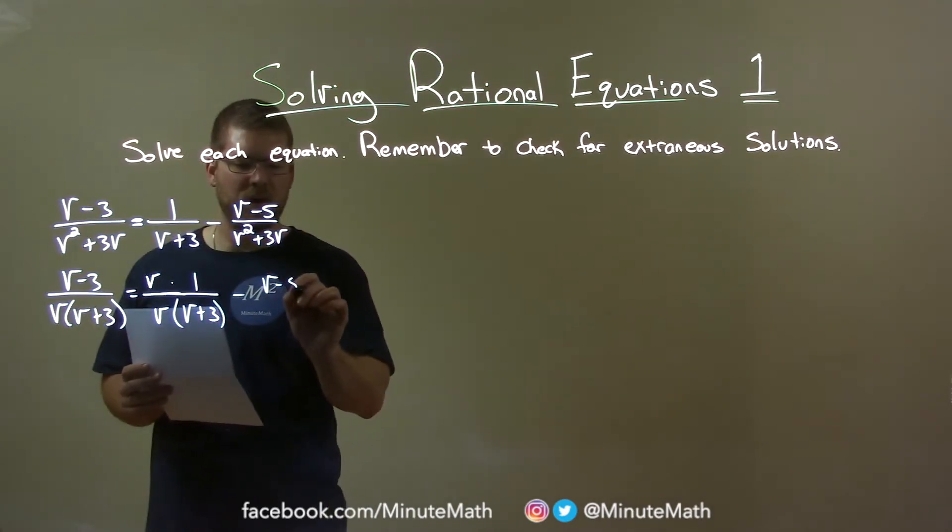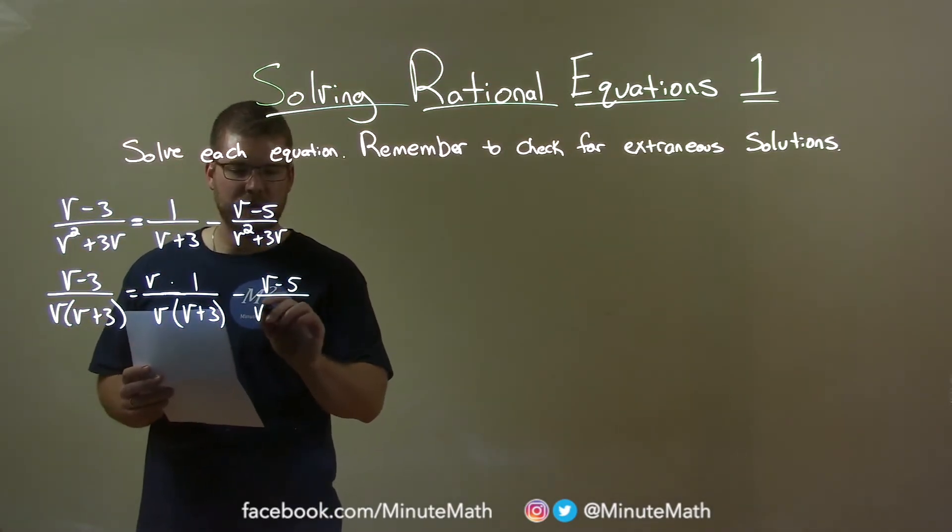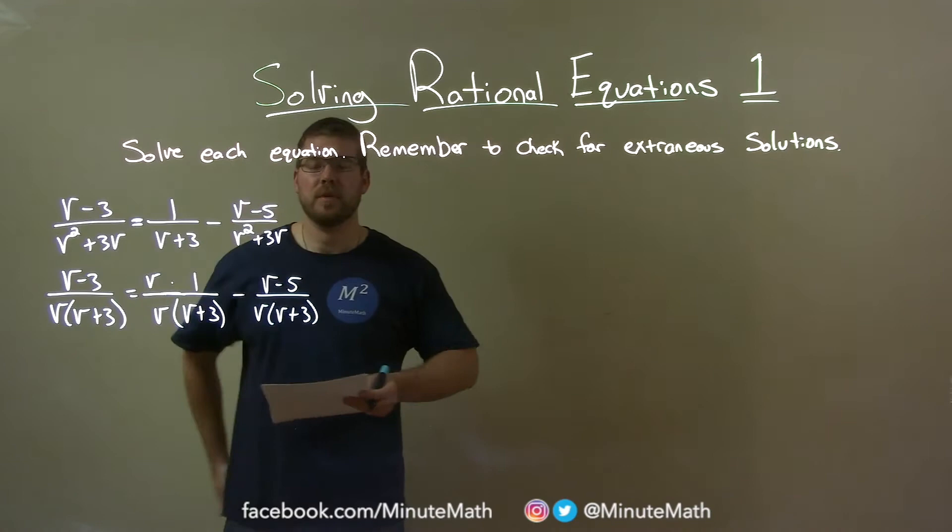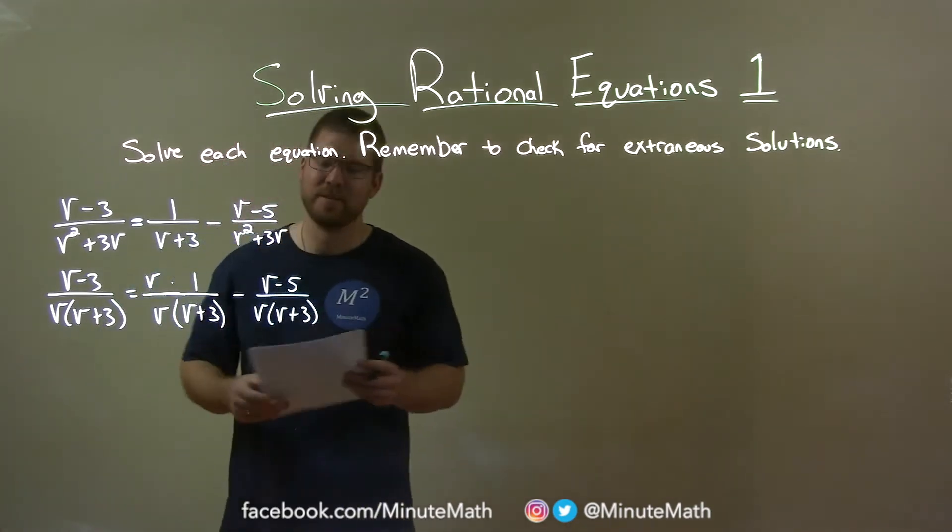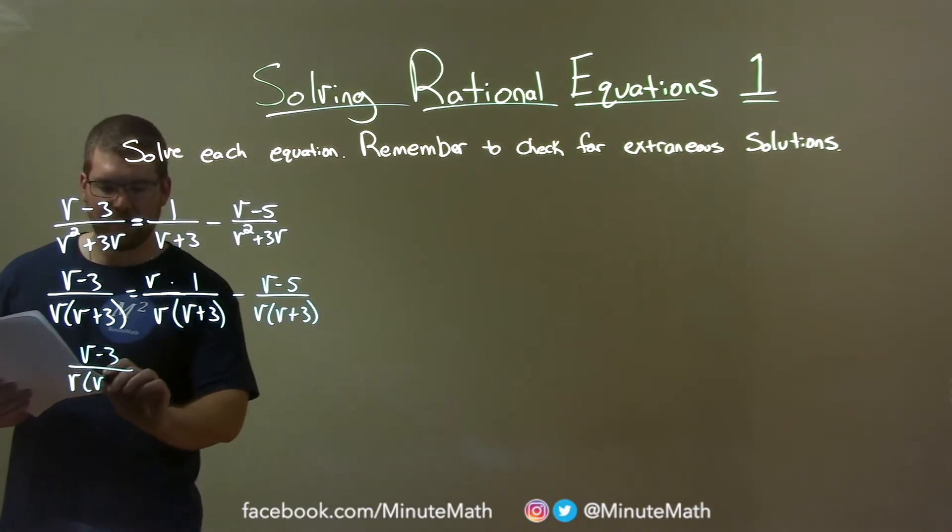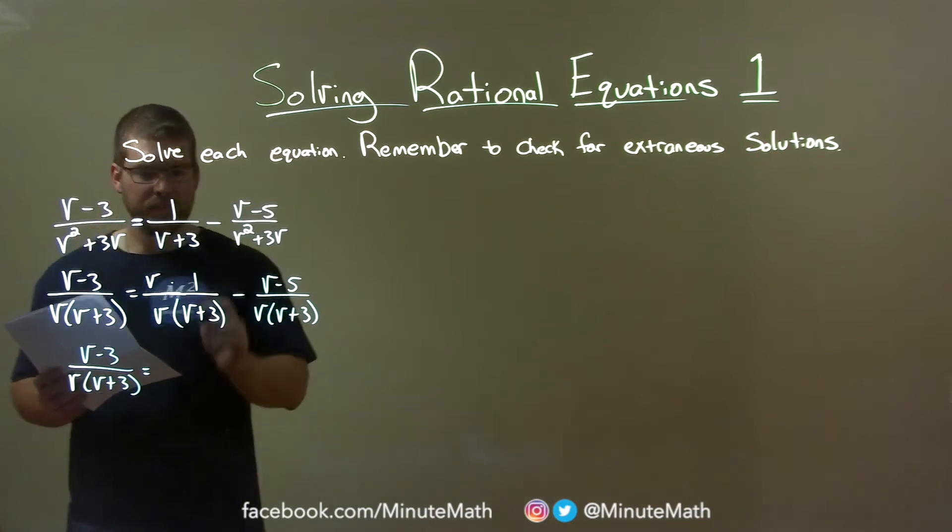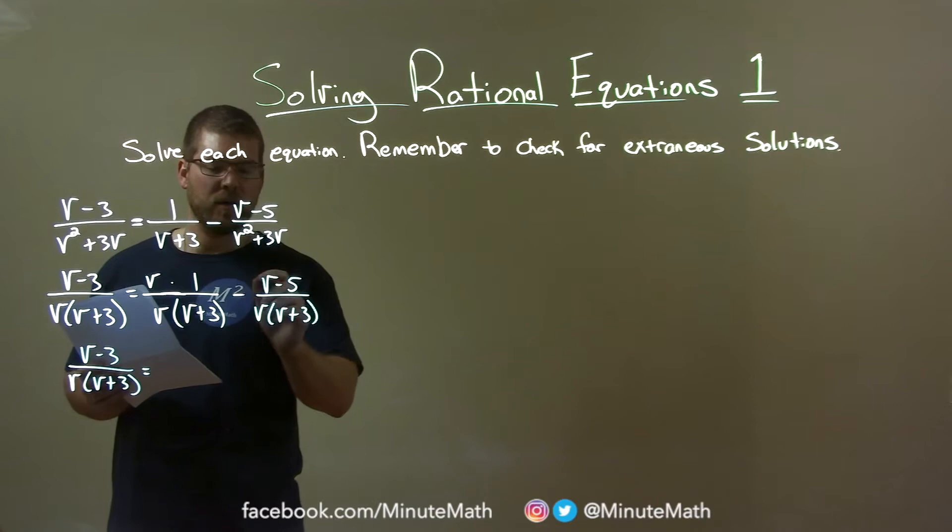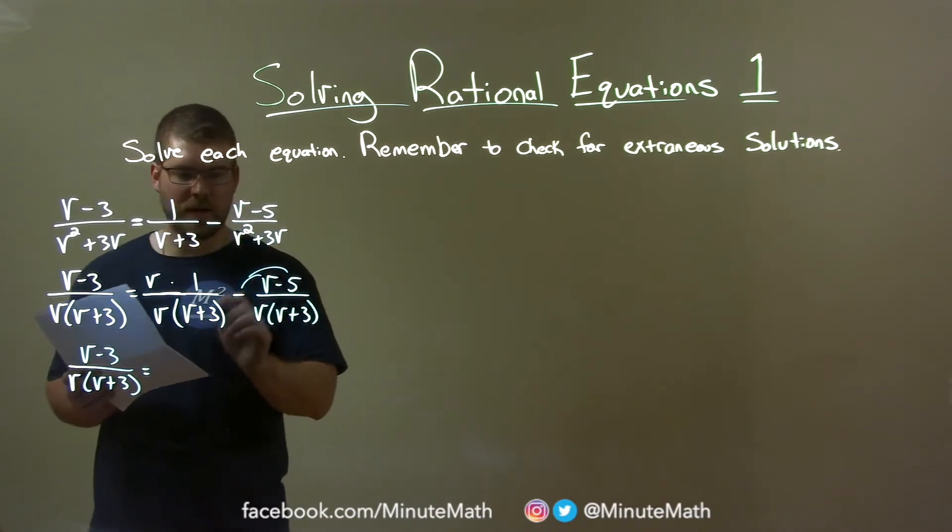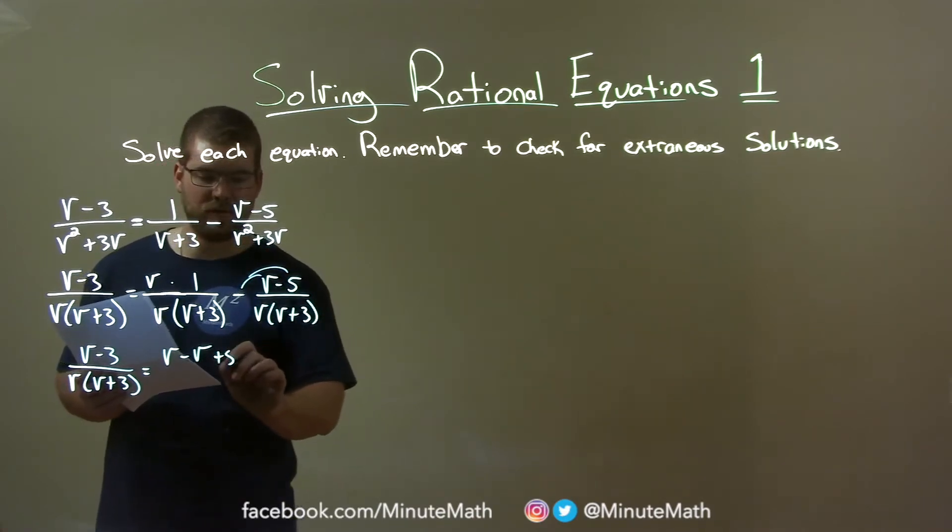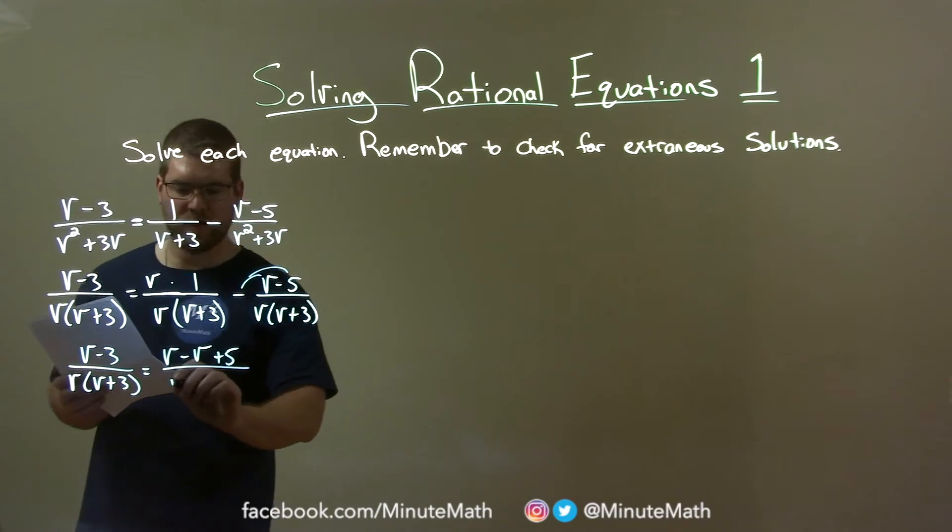Again, subtraction here, v minus 5 over, do it again, pull out the v and we have v times v plus 3 here. So now we have the same denominator, we can subtract the right-hand side. Left-hand side, let's keep the same, v minus 3 over v times v plus 3. Here, let's subtract the numerator, which we can, v minus v minus 5. We can distribute that minus sign across and so we have v minus v and then minus minus 5 is plus a positive 5, plus 5 over that denominator is just now together, v times v plus 3.